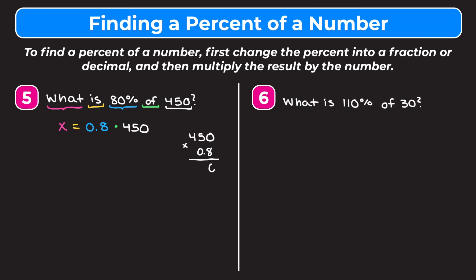8 times 0 is 0, 8 times 5 is 40 so carry the 4, 8 times 4 is 32 plus 4 is 36. We don't need the second line because it's just 0 times everything, giving all zeros. In our original numbers we had one digit to the right of the decimal point, so we want one digit to the right in our answer. We place the decimal accordingly and get X equals 360, meaning 80% of 450 is 360.